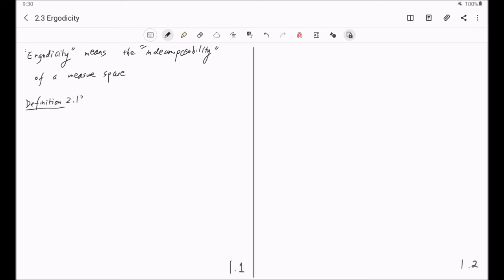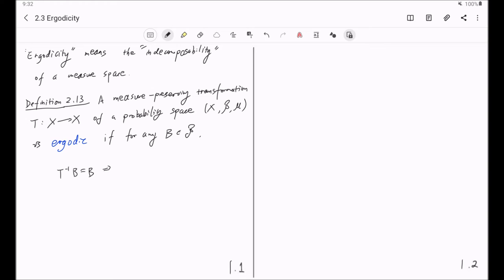So, this is definition 2.13 in the book. A measure preserving transformation, T from X to self of a probability space, X, B, Mu is called ergodic if for any measurable subset B, that is strictly invariant under T, we have this subset has zero measure or full measure.